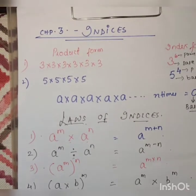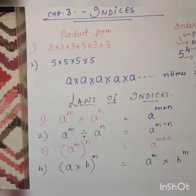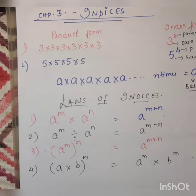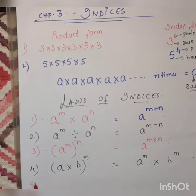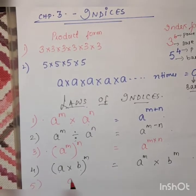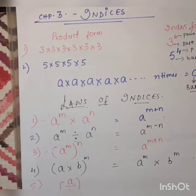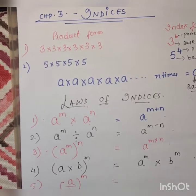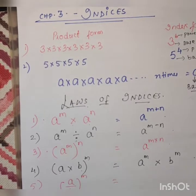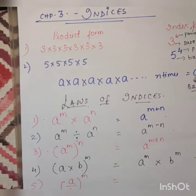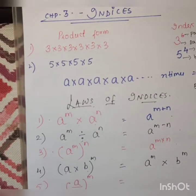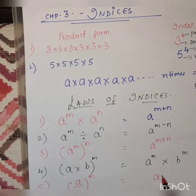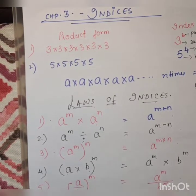Next is the same thing but if we divide: A upon B the whole raised to M. When we open this bracket the power goes to both, giving A raised to M upon B raised to M.